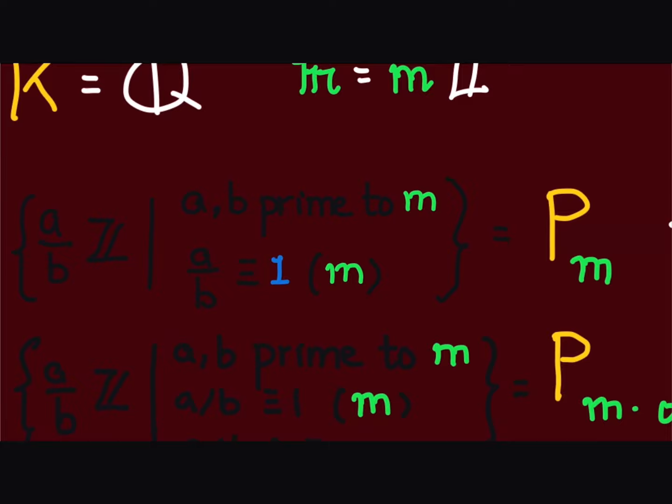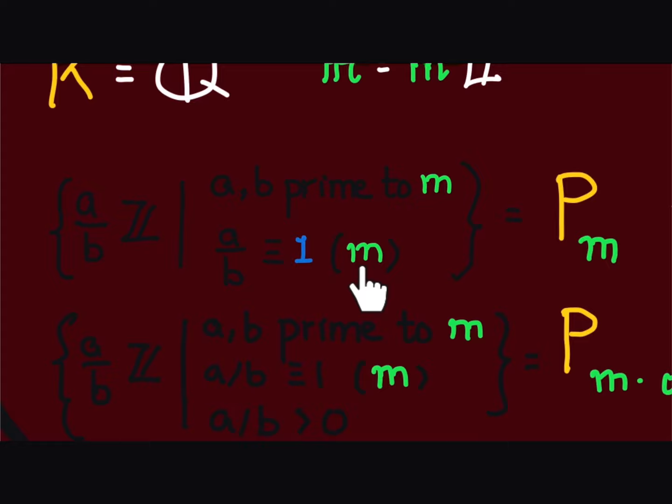In that case, P_m consists of principal fractional ideals generated by a over b that are congruent to 1 modulo m.